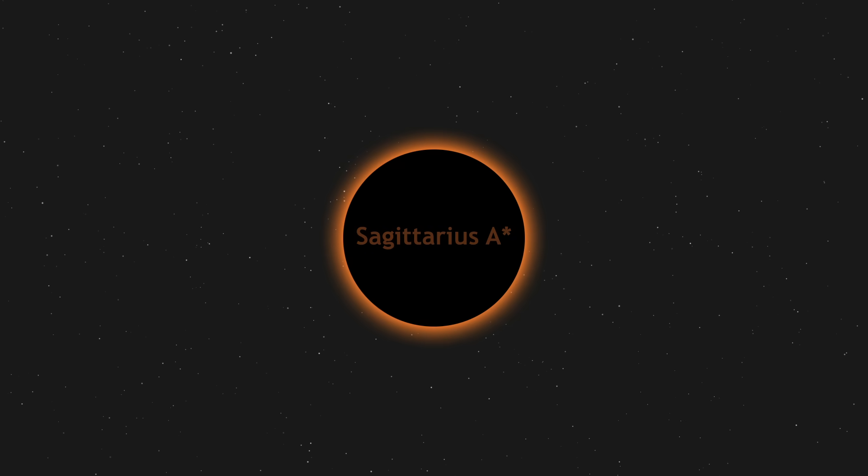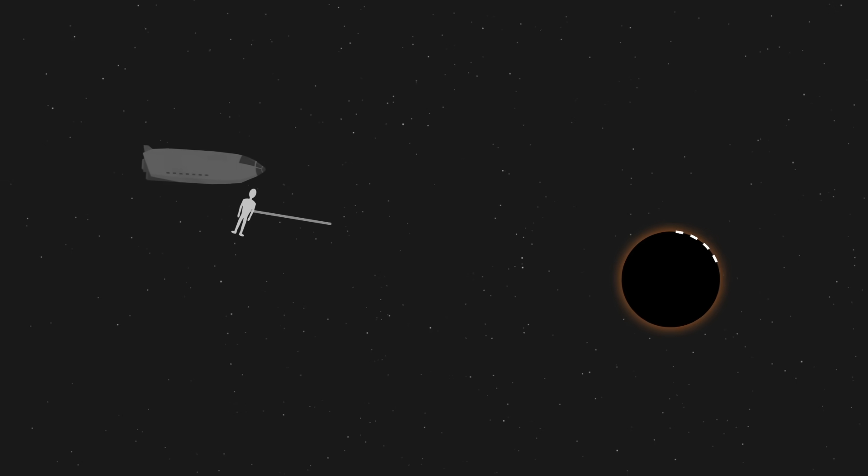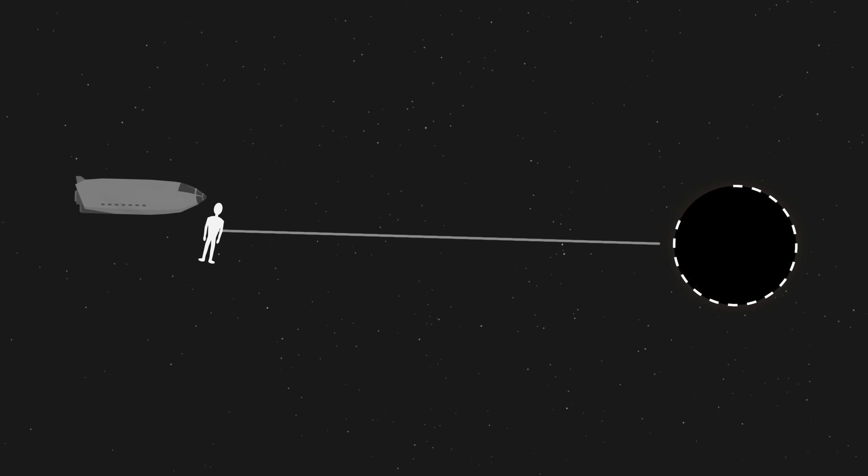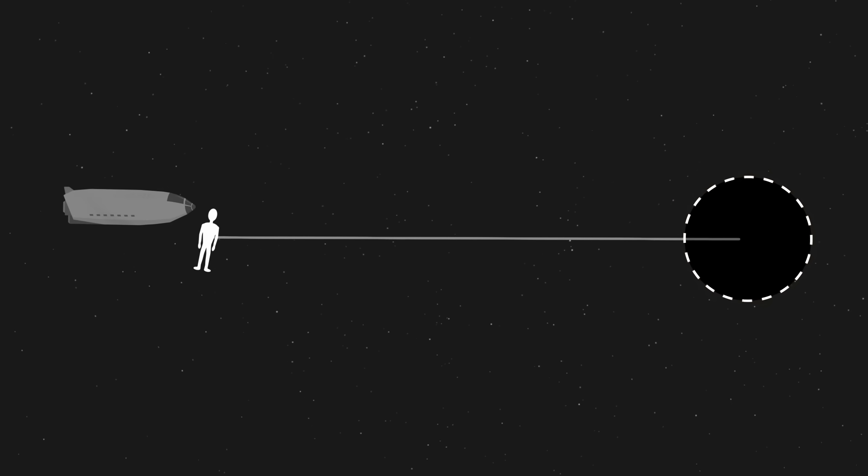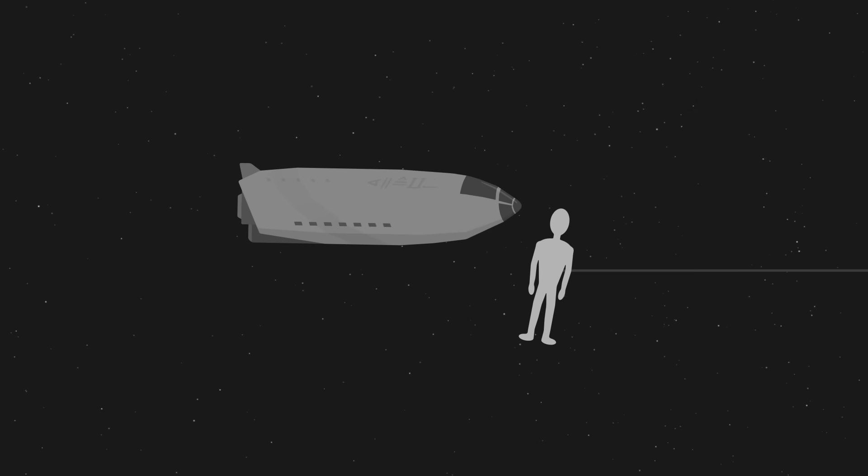Our galaxy, the Milky Way, hosts in its core a supermassive black hole called Sagittarius A star. Using a spaceship, we approach it at a reasonable distance, and we jump into the void of space. Here begins our fall. It will last about one hour and will be fatal to us. The spaceship remains stationed, orbiting the black hole and witnessing our fall.